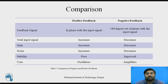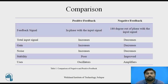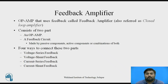This table shows a comparison between positive feedback and negative feedback. The feedback signal in positive feedback is in phase with the input signal, while in negative feedback it is 180 degrees out of phase. Because of this, the total input signal increases in positive feedback and decreases in negative feedback. Gain increases in positive feedback and decreases in negative feedback. Noise increases in positive feedback and decreases in negative feedback. Due to this, stability is poor in positive feedback but improved in negative feedback. From an application point of view, positive feedback is used in oscillators and negative feedback is used in amplifiers.